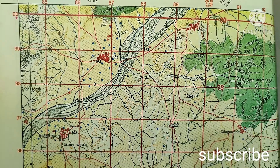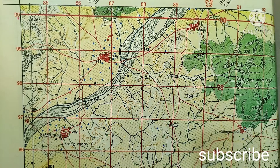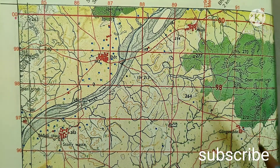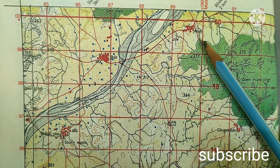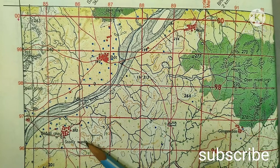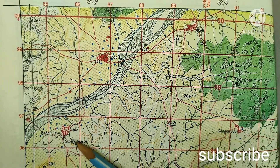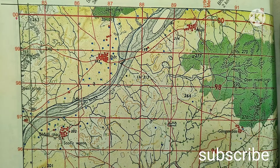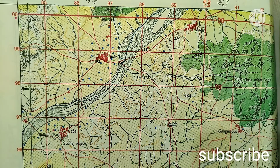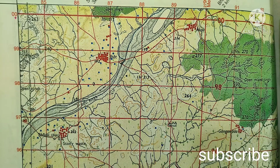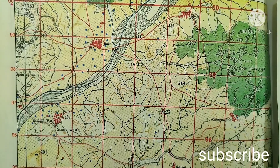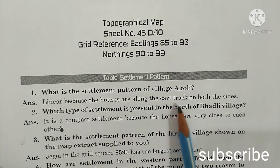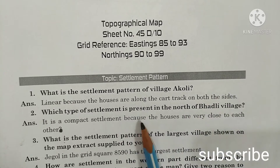Now let us discuss the settlement pattern of sheet number 45D/10 through question and answers. Here we'll see two different types of settlement. In the north part you can see Akoli village, which has a linear pattern. Coming down towards west and southwest we see Bhadli village, which has a compact settlement. The grid reference of this topo map: eastings 85 to 93, northings 90 to 99. Question: What is the settlement pattern of village Akoli? It is linear because houses are along the car track on both sides.